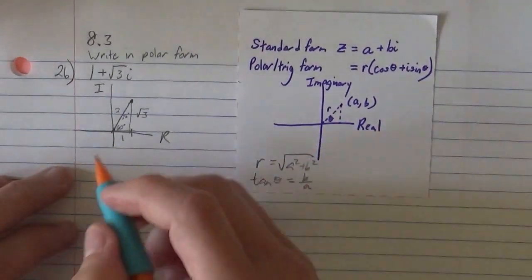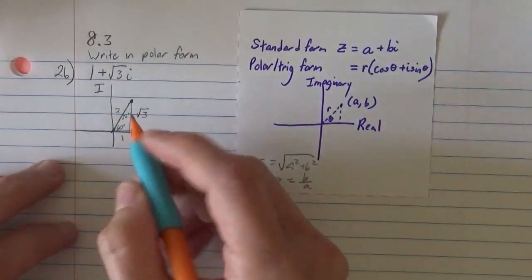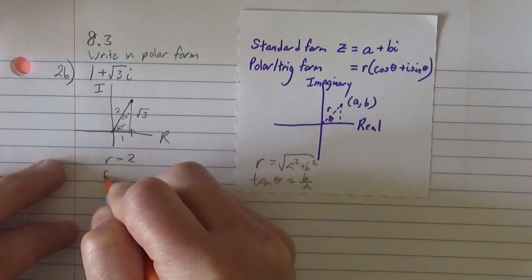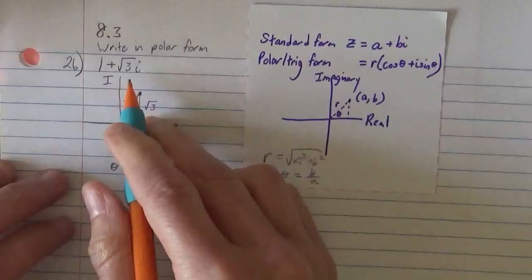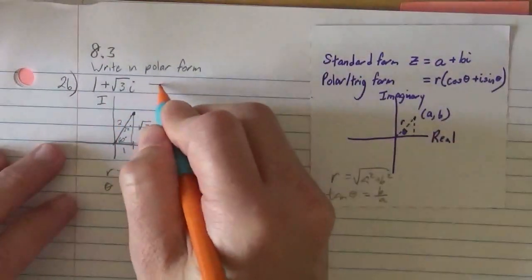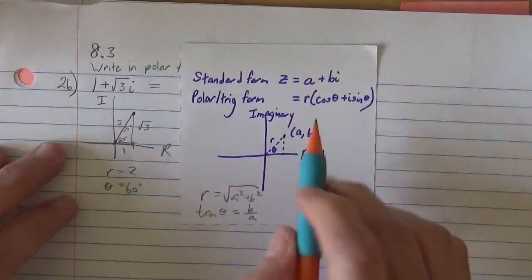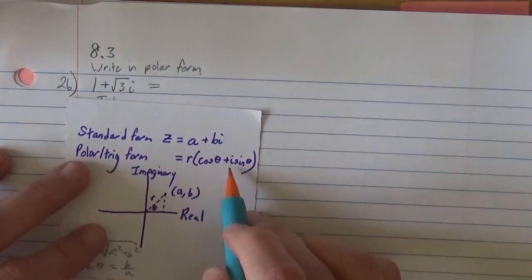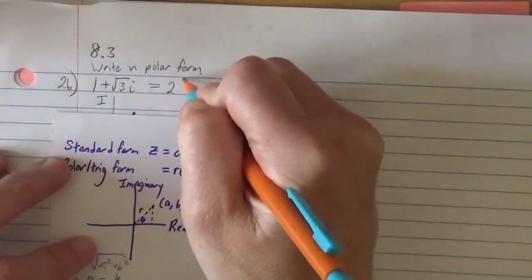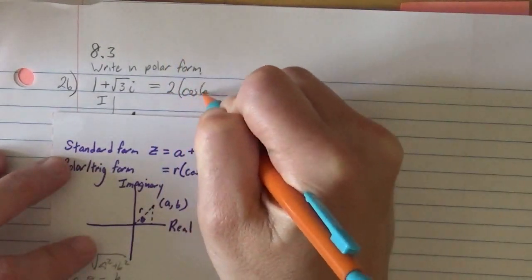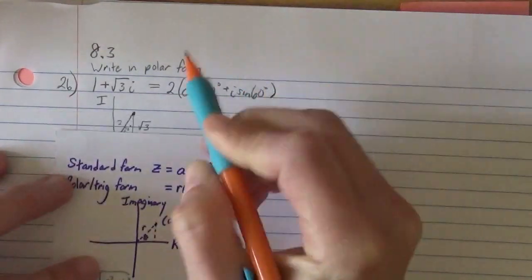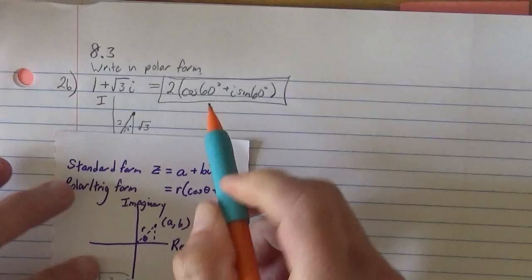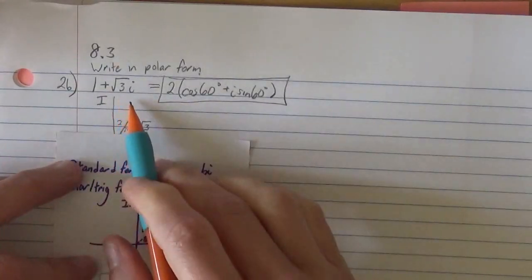Now that we know that our radius is 2 and our angle is 60 degrees, we could write this 1 plus root 3i as r times the cosine of theta plus i sine theta. So our radius was 2. We have the cosine of 60 degrees plus i sine 60 degrees. And this is our polar trig form. It's another way of expressing this.